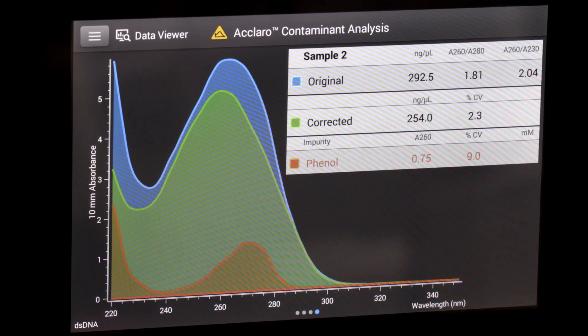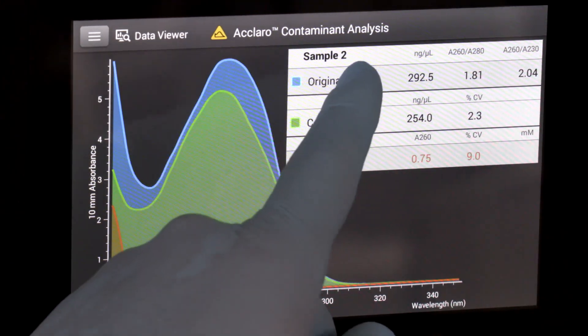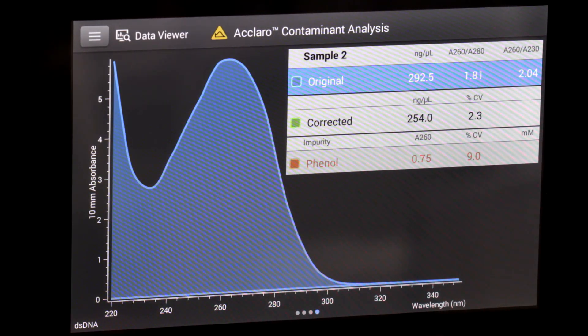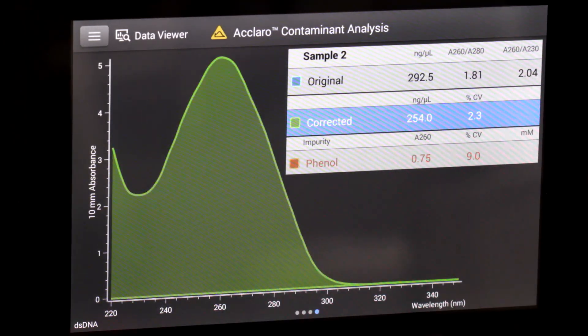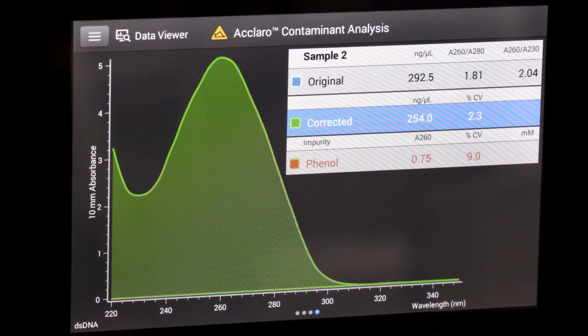On any other UV-Vis instrument, the presence of phenol in your sample would cause an overestimation of the DNA concentration, not with the NanoDrop One instrument. The goal of the Acclaro technology is to provide a true sense of how much DNA is in your sample so you use the correct amount the first time.